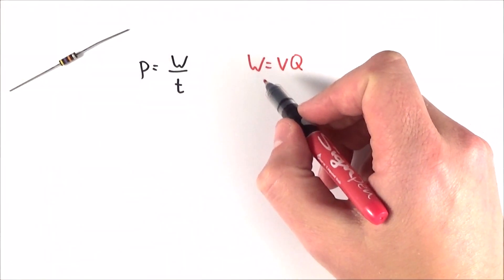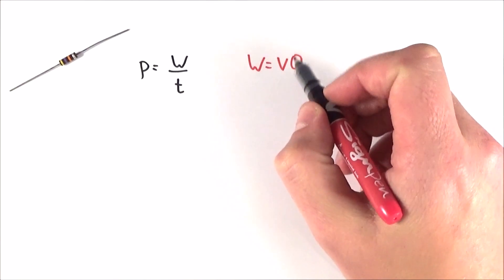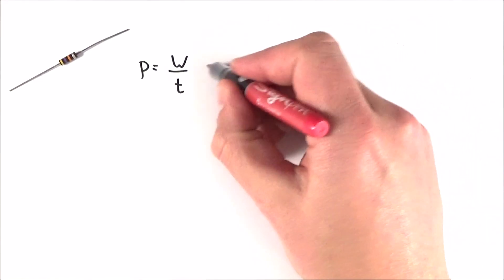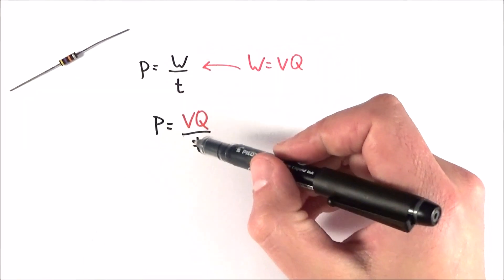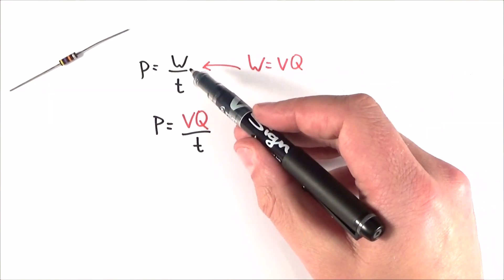So in a previous video, we've looked at this equation here, where the work done is equal to the potential difference multiplied by the charge. And what I can do is I can substitute this into this equation. So here we have P is equal to VQ divided by T, and I've just put this term here to replace the W here.